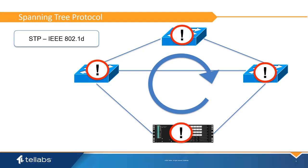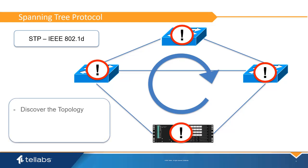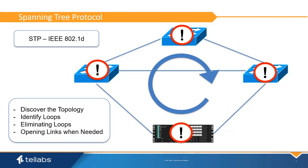The key functions of STP are discovering the topology of the network, looking for loops within the topology, eliminating loops, and opening redundant links in the case of a network failure.